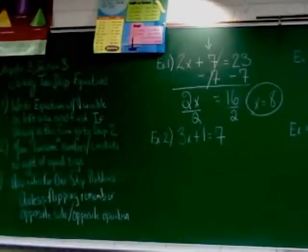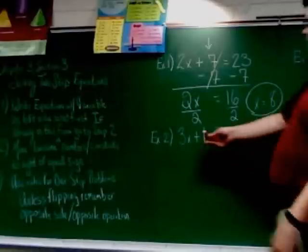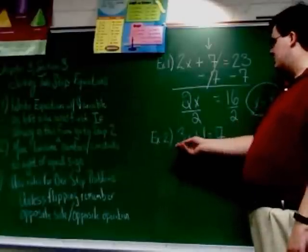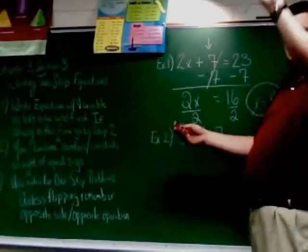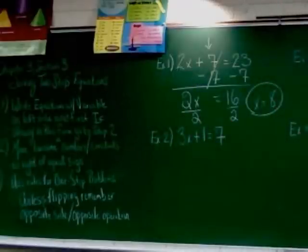Let's go to example 2: 3x plus 1 equals 7. Step 1: Write the equation with the variable on the left side and first. So the variable is on the left side of the equal sign, and it's in the first term here. Fantastic. Step 2: We have to move the lonesome numbers or the constants to the right of the equal sign.